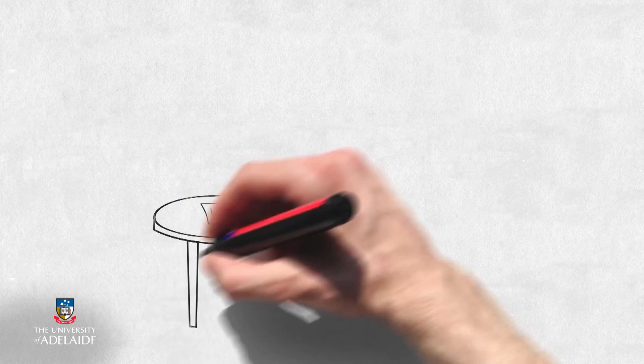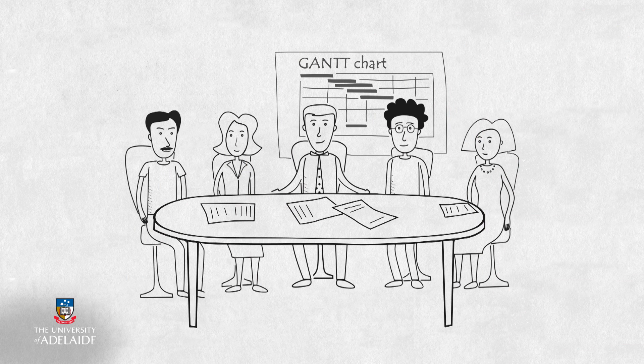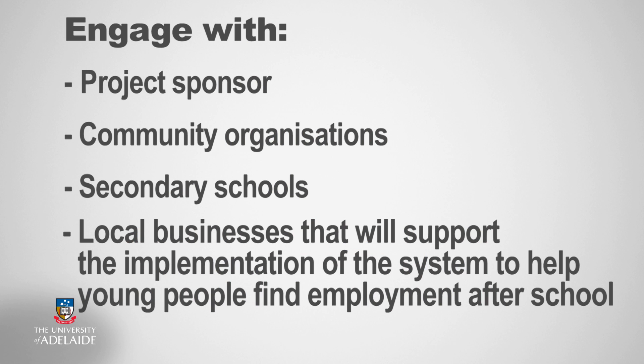Let's contextualise this to Peter's office project and consider the stakeholders that he needs to engage and communicate with throughout the project lifecycle. Peter has a diverse group of stakeholders that he needs to consider. The management team within the organisation, as well as his project team, make up the internal stakeholders that he needs to manage. External to the organisation, Peter will need to engage with the project sponsor, community organisations, secondary schools and local businesses that will support the implementation of the system to help young people find employment after school.